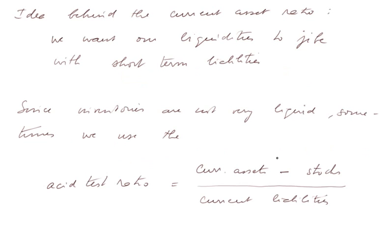So that's what I explained. Since the idea behind the current asset ratio is we want our liquidities to jive with the short-term liabilities, and since inventories are not very liquid, sometimes instead of using the current asset on top, we use current assets minus the stocks. That is even more liquid stuff divided by current liabilities. And it's called the acid test ratio.